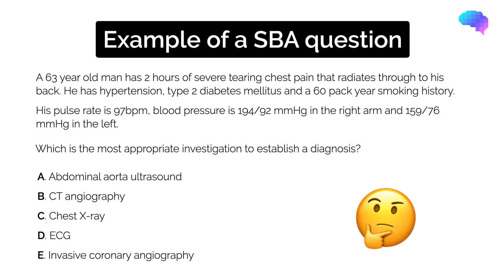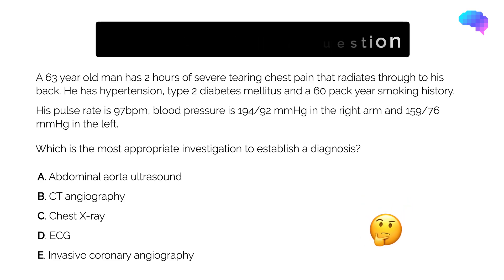This is a tricky single best answer question because it requires you to firstly recognise that the suspected diagnosis is aortic dissection, and then tests whether you know which is the best investigation to diagnose it. Hopefully you found it useful to go over the structure of a single best answer question, and you can see how these questions are testing your ability to apply medical knowledge.